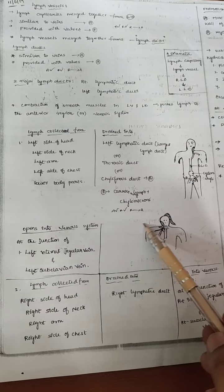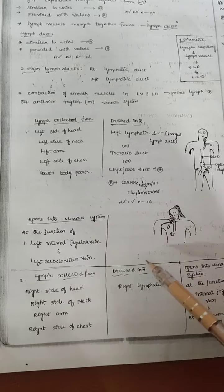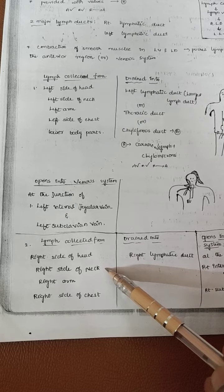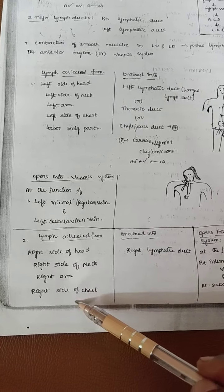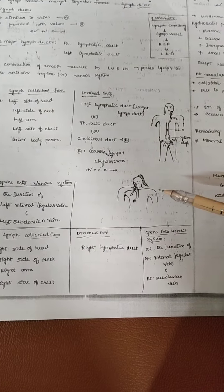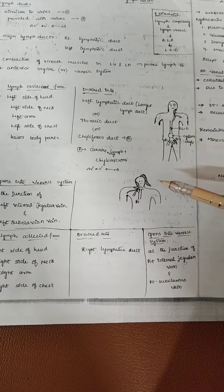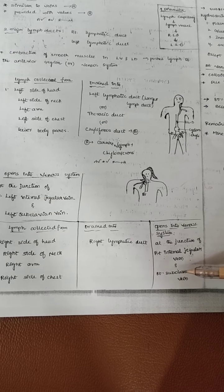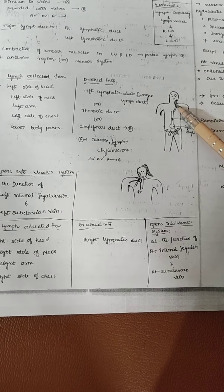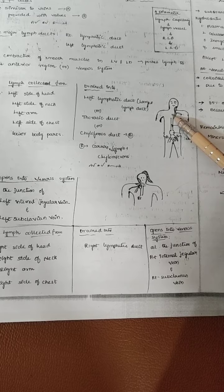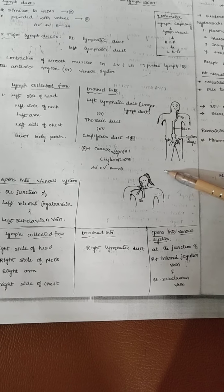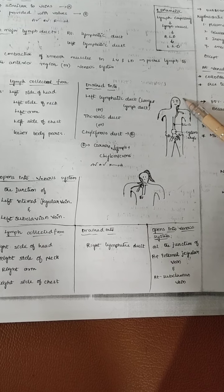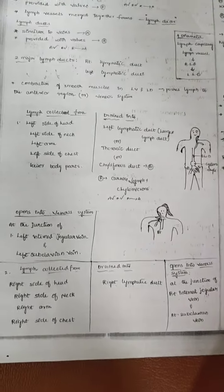The lymph collected from the right side of the head, right side of the neck, right arm, and right side of the chest enters into the right lymphatic duct. From the right lymphatic duct it enters into the right internal jugular vein and then the right subclavian vein, both opening into the right atrium. This is the accessory route through which we can approximately filter all the blood.